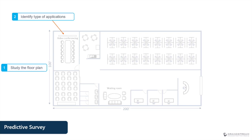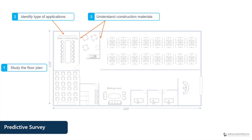The installer needs to identify the type of wireless applications and devices that users will have. For example, delay-sensitive applications such as video conferencing require enough bandwidth and QoS configuration. Also, understanding the construction materials in the facility can help predict signal propagation and signal strength to prevent any issues in the wireless coverage and speed.